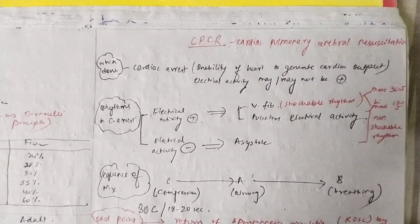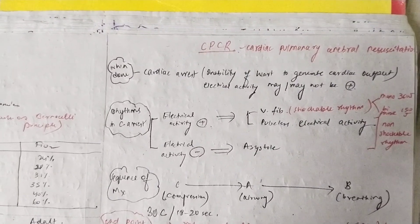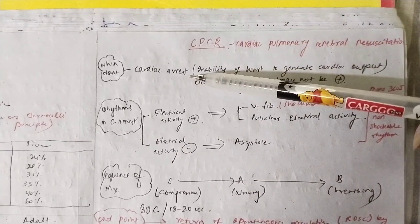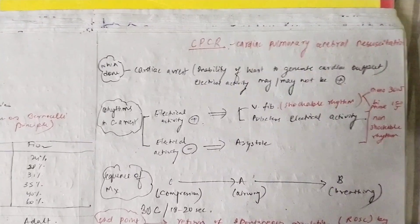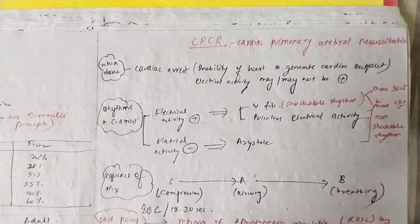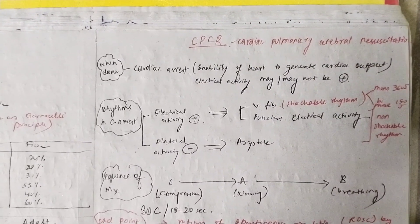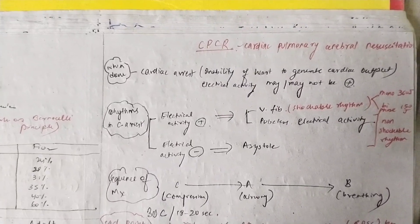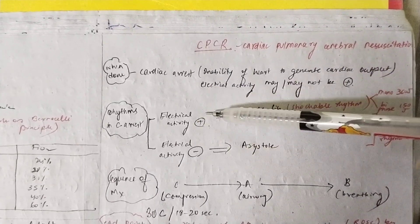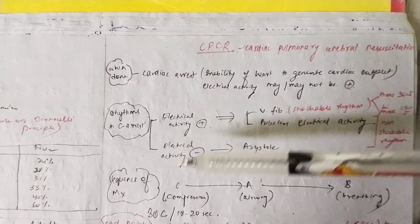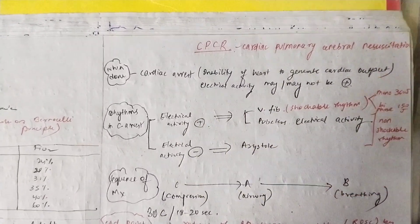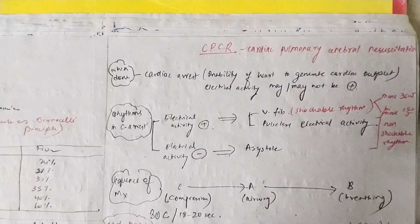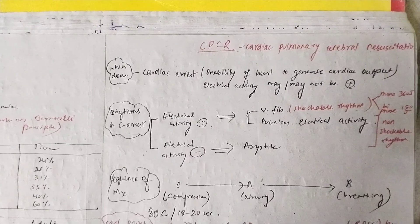When do you do CPCR? You do it when the patient is in cardiac arrest. Cardiac arrest is the inability of the heart to generate cardiac output. Cardiac arrest can be of two types: when electrical activity is present, and when electrical activity is absent. But what is common is that the heart is unable to generate a cardiac output.